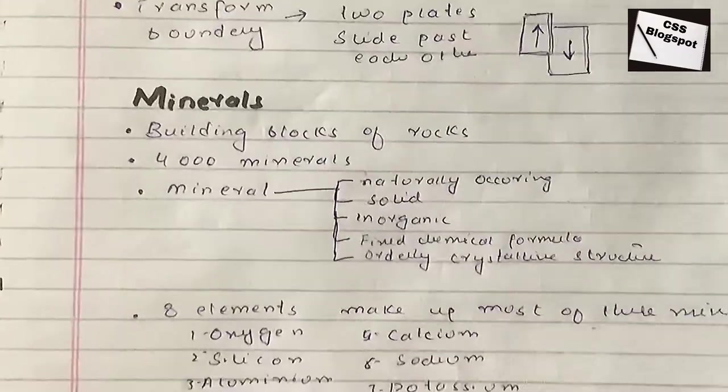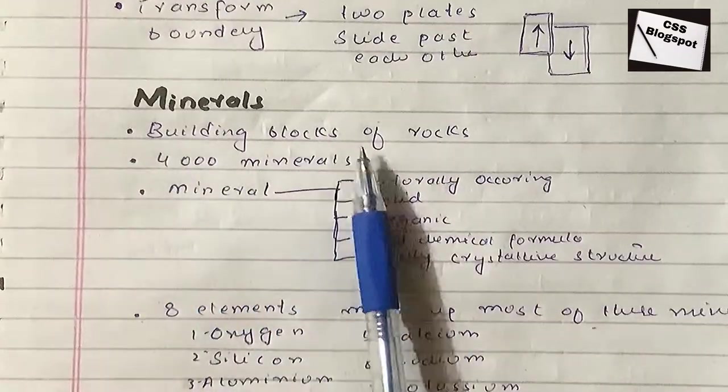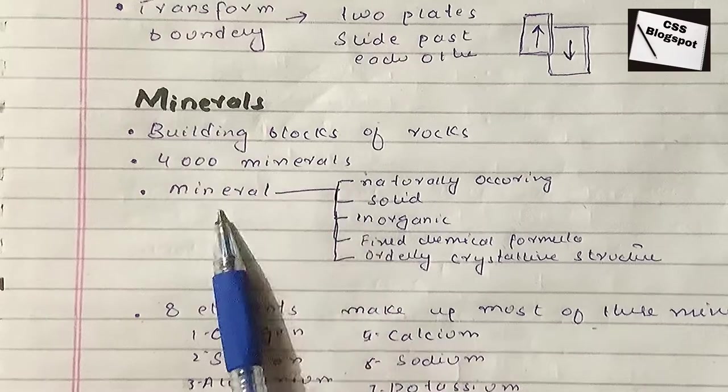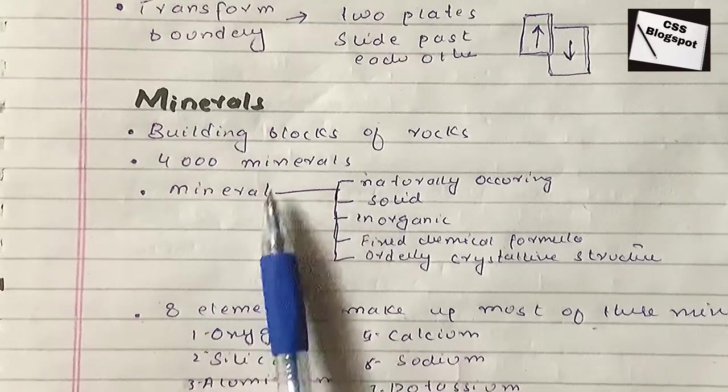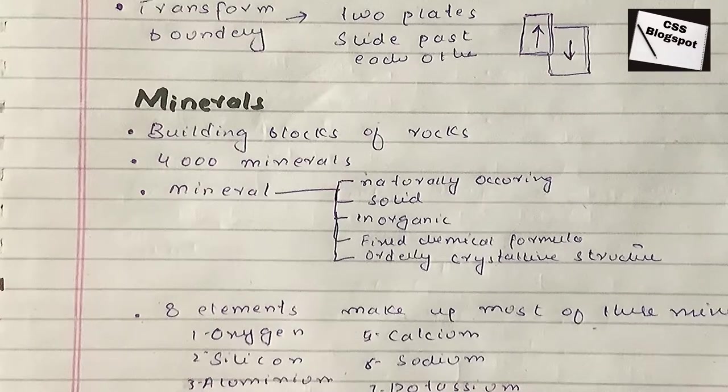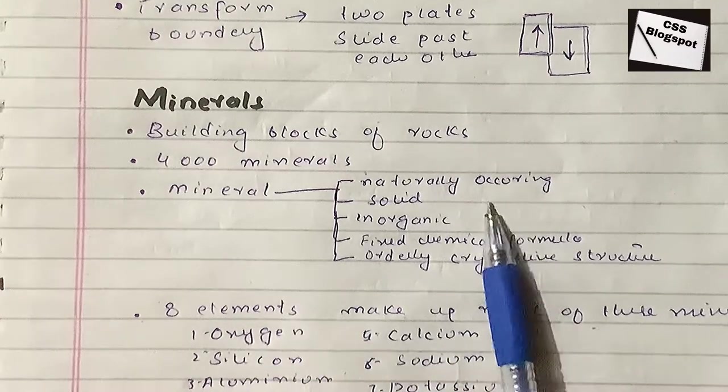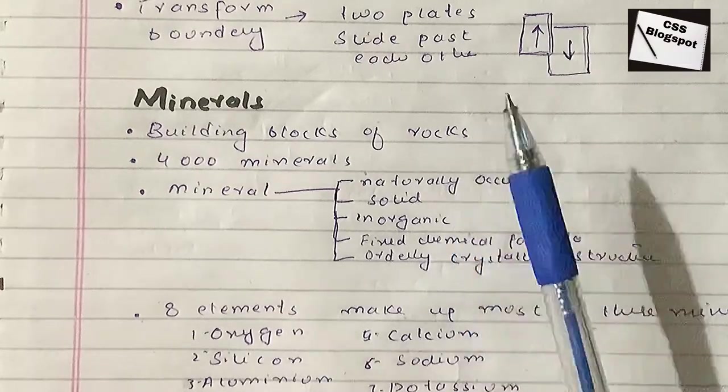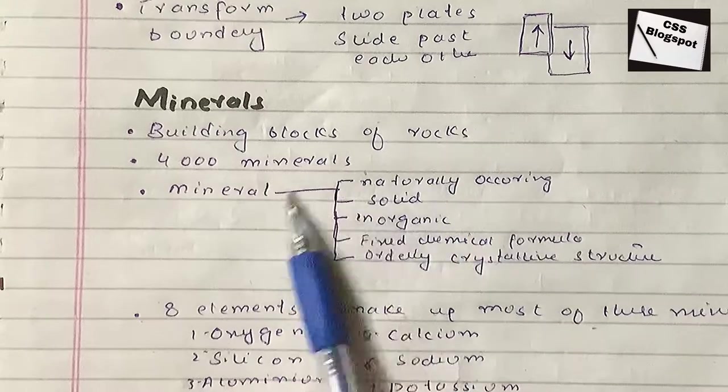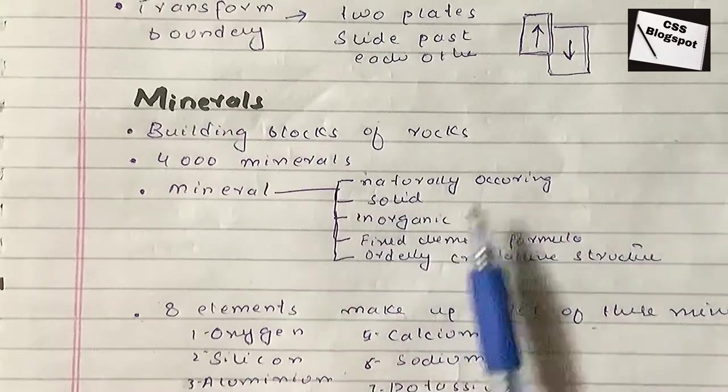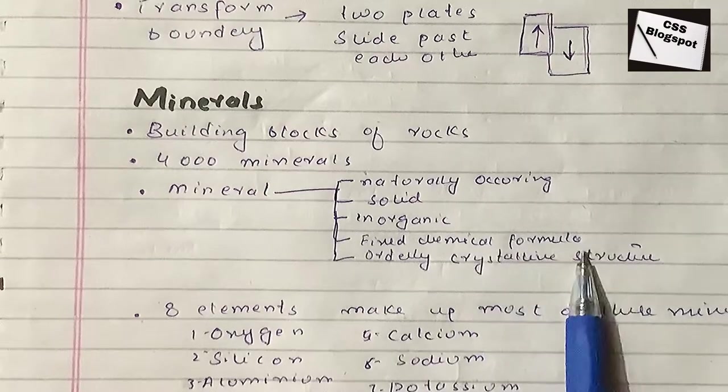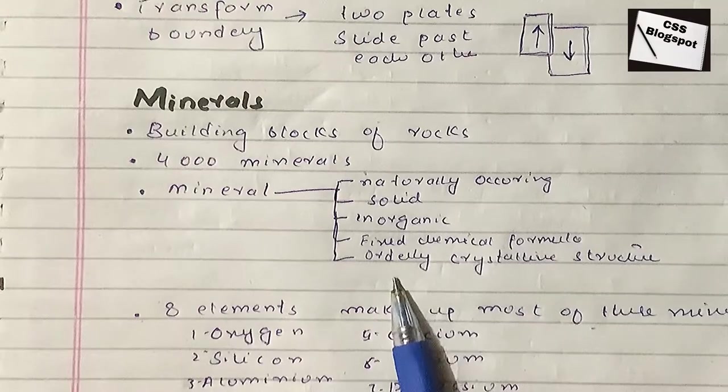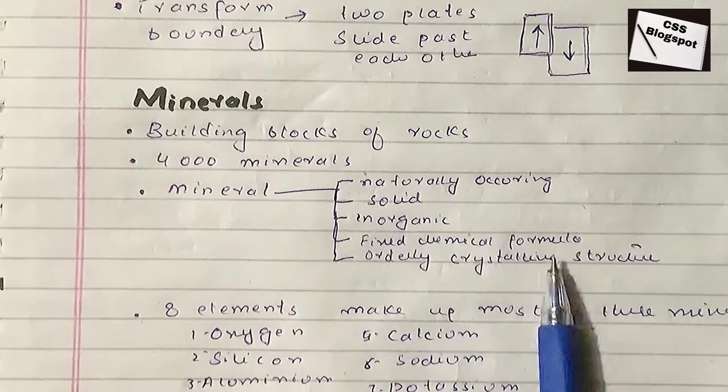Minerals are the building blocks of rocks. We have 4,000 types of minerals. How can we know if something is a mineral or not? A mineral must be naturally occurring, not synthetic. It should be solid, inorganic, have a fixed chemical formula because the composition is constant, and have an orderly crystalline structure.